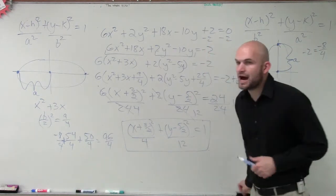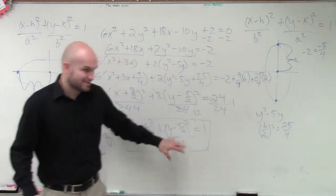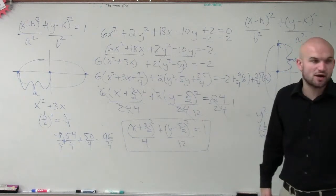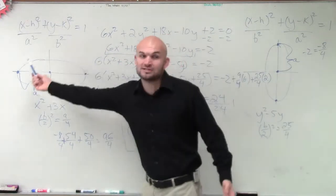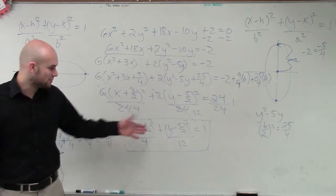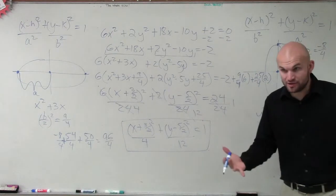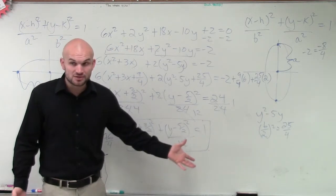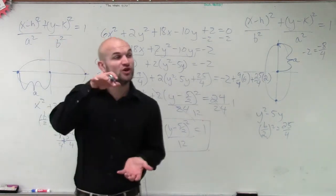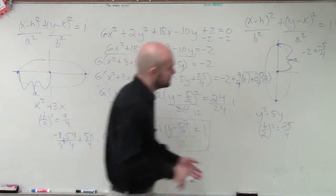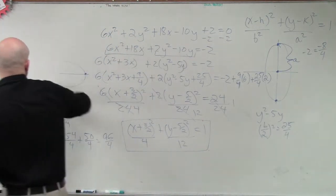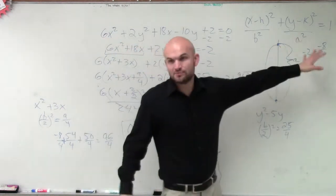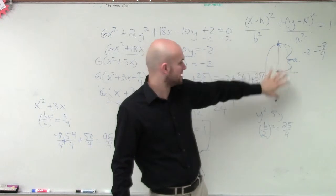Now I need to determine what the major axis of symmetry is. We need to determine whether it's going to be horizontal or vertical. Where is our a squared? 12 is your a squared because a is larger than b — a represents the major axis and b represents the minor axis. Since the larger value is under the y, that means the major axis is going to be vertical. So the formula we're dealing with today is the one where a squared is under the y.